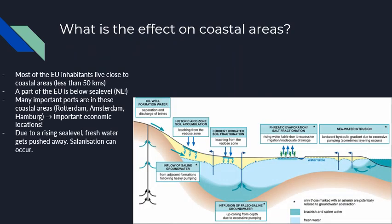What is the effect on coastal areas? Most EU inhabitants live within 50 kilometers of coastal areas, and part of the EU is below sea level — like the Netherlands. Important ports like Amsterdam, Rotterdam, and Antwerp are economically vital but are below sea level. With a rising sea level it becomes very difficult to use these ports, and fresh water gets pushed away, causing further salinization.